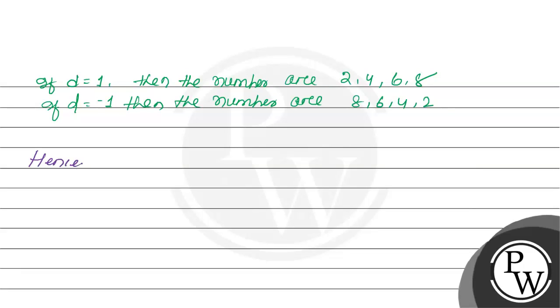Hence, we consider the numbers are 2, 4, 6, 8 or 8, 6, 4, 2. That will be your answer. I hope you must understand the explanation. Thank you.